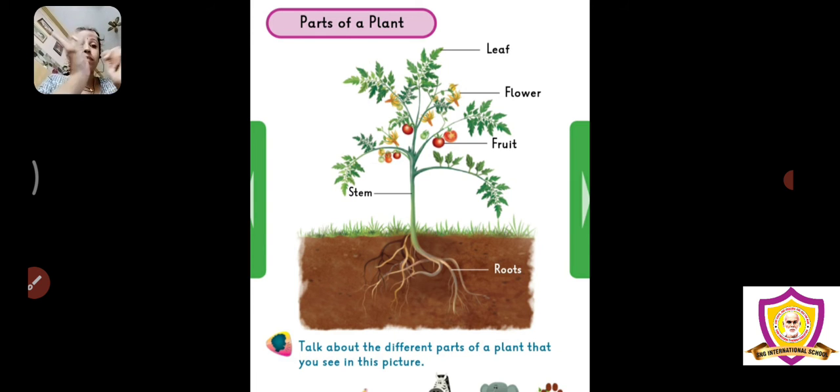And from there the branches grow out. In the branches, we have fruits, we have leaves and from the leaves, small flowers come out. And then the flowers will turn into fruits.